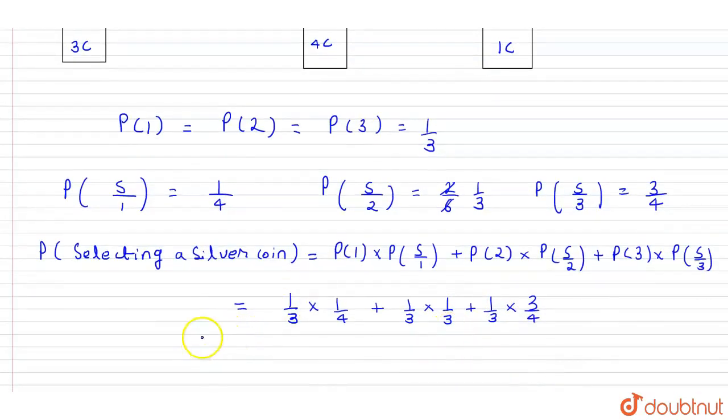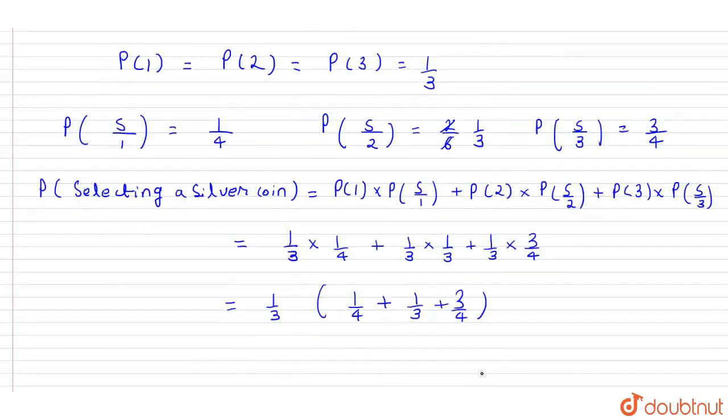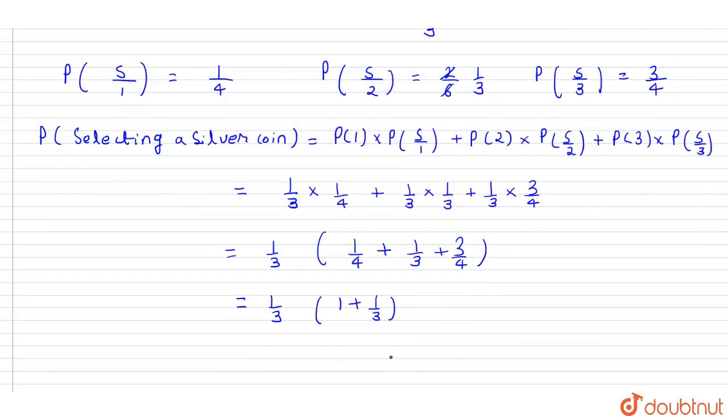We can take 1 by 3 as common, so what remains is 1 upon 4, plus 1 upon 3, plus 3 upon 4. This becomes 1 by 3 times: 1 by 4 plus 3 by 4 is 1, plus 1 upon 3. This equals 4 by 3, so we get 4 by 9.